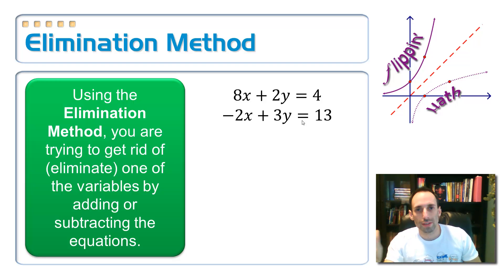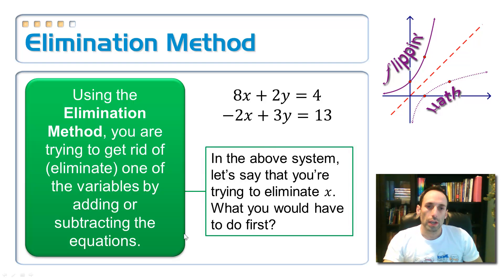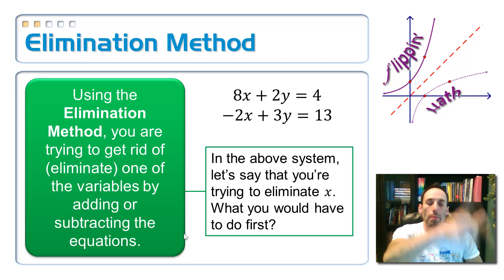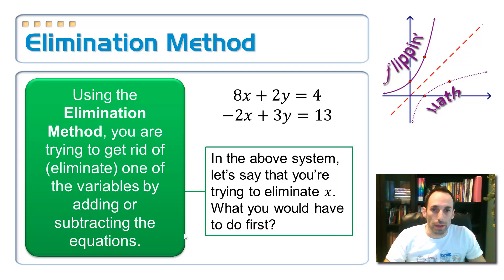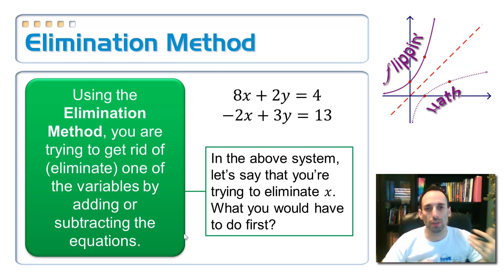Sometimes it's not quite that simple though. Take a look at the two equations in this system. If I just added up my x's and my y's — if I added my two equations — nothing would eliminate. So what would you have to do to this system first so that something would get eliminated?